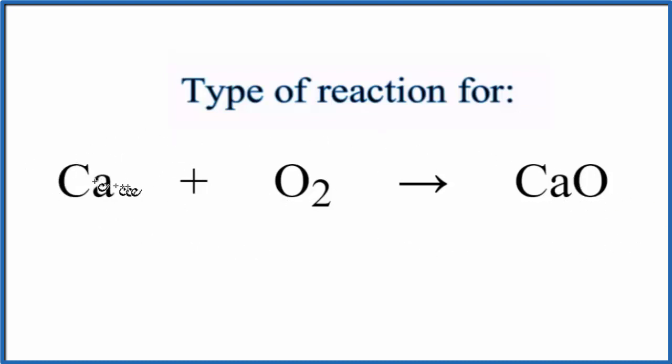When we look at this reaction we see we have one thing here, another here. These two things join together and combine to form a new product, this calcium oxide. So when you have two separate things combined like that to form one product.